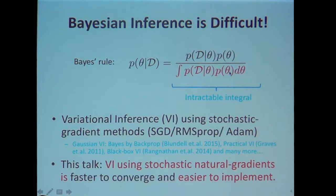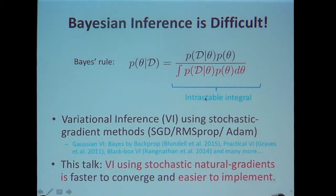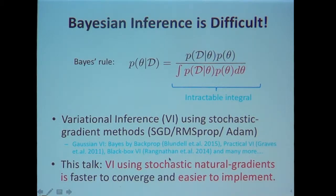Methods like MCMC have not really been used that much, and people have been usually resorting to variational inference. As Jun was just talking about, variational inference can be cast as an optimization problem. It approximates this integral, and once you have an optimization problem, you can apply a stochastic gradient method using standard deep learning software.